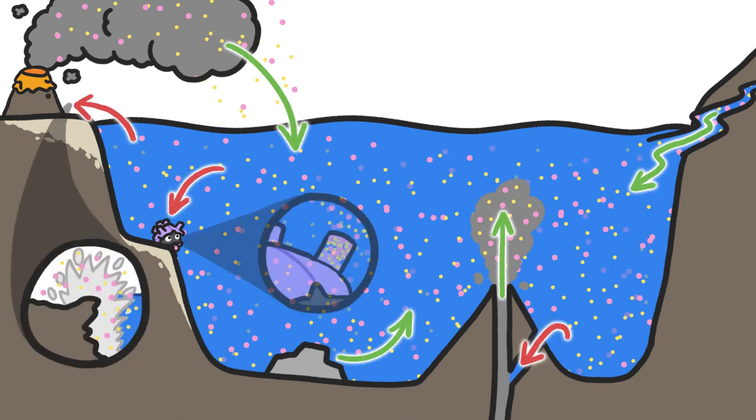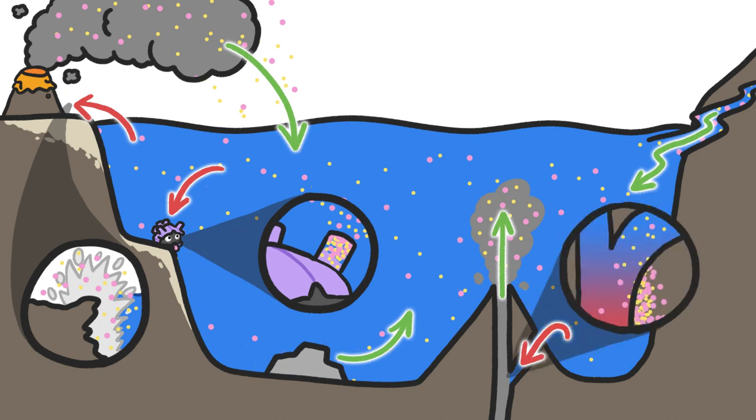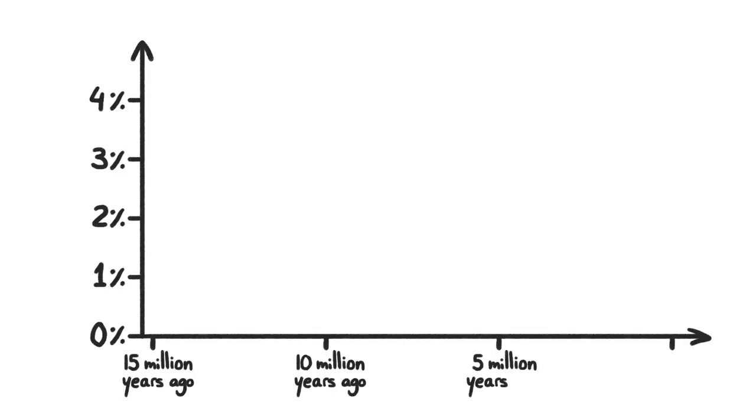Some end up on land, some are taken up by sea life to do stuff like build shells, and lots get absorbed by hydrothermal vents and incorporated into Earth's crust. As a result, the overall concentration of ions in the ocean, its salinity, has remained pretty constant over time.